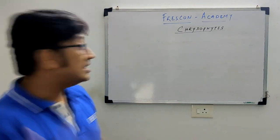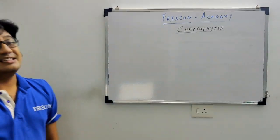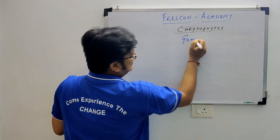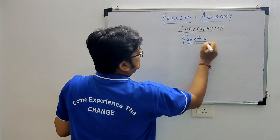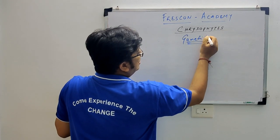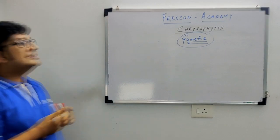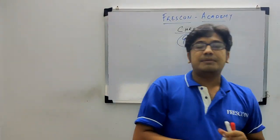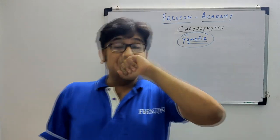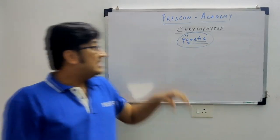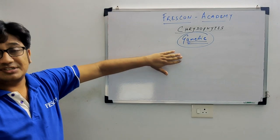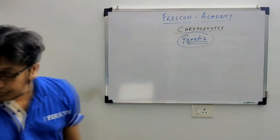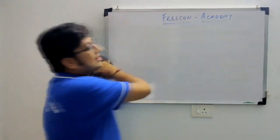One more thing about Chrysophytes: their life cycle is gametic, which means it is diplontic. Compare this: Dinoflagellates showed zygotic life cycle which was haplontic; Chrysophytes show gametic life cycle which is diplontic. And that's Chrysophytes done.